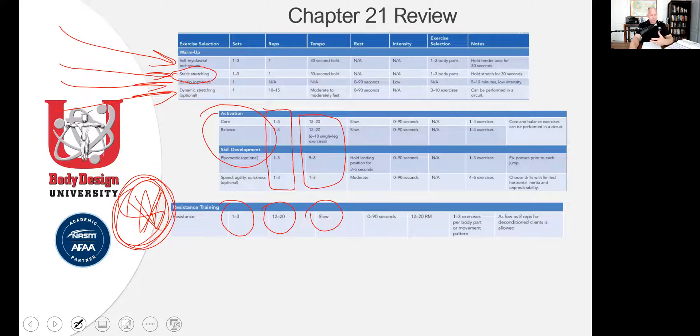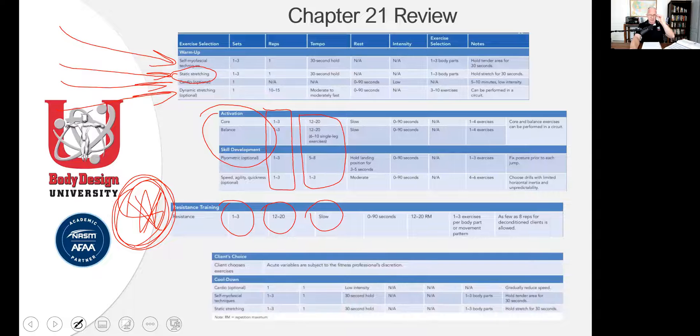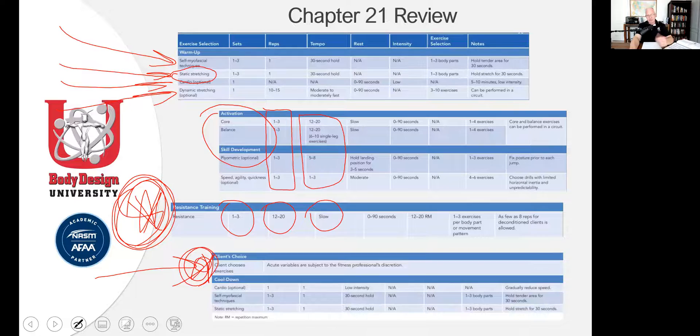When you get to this bottom area, what you're going to notice is that these guys are almost exactly the same. So client's choice is always going to be acute variables. Client choice is always easy. You don't even have to memorize that. And generally down here in the cool down, they're all going to be almost exactly the same. If there are any differences, they're going to be so minor. It's just not even worth mentioning. So what did we just do? We essentially got all this information that appeared to be totally overwhelming, and you started to pick and choose and realize that when all is said and done, if I was to overlay all five on top of each other, more than half of the material would all be the same from one phase to another.